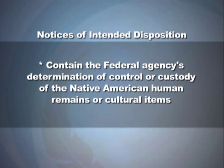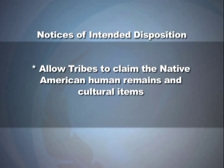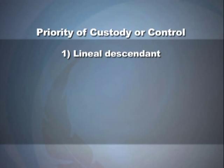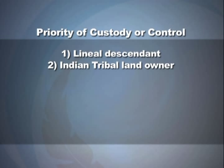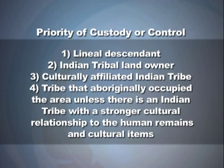Notices of intended disposition allow tribes to claim Native American human remains and cultural items. Federal agencies must follow a hierarchy called a priority of custody or control. First priority is to the lineal descendant, requiring an unbroken chain of descendancy. Second is the Indian tribal landowner. Third is the culturally affiliated Indian tribe. If none of these apply, the federal agency looks to the tribe that aboriginally occupied the area, unless another tribe has a stronger cultural relationship.